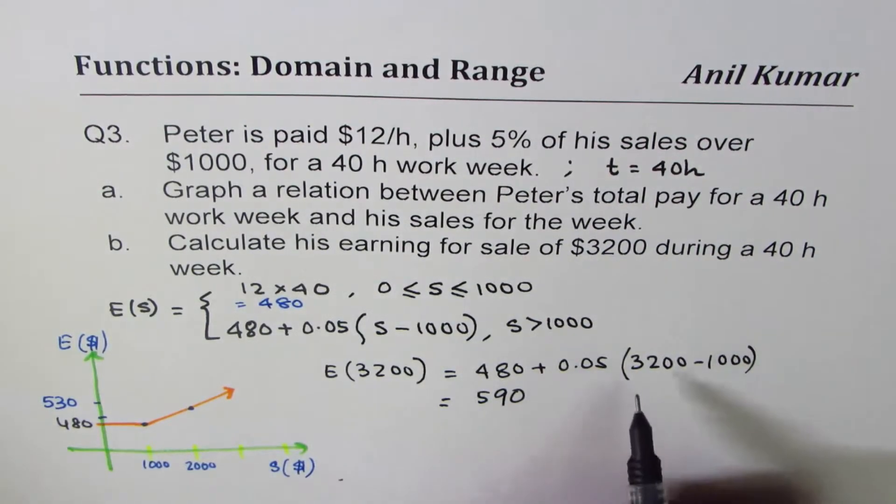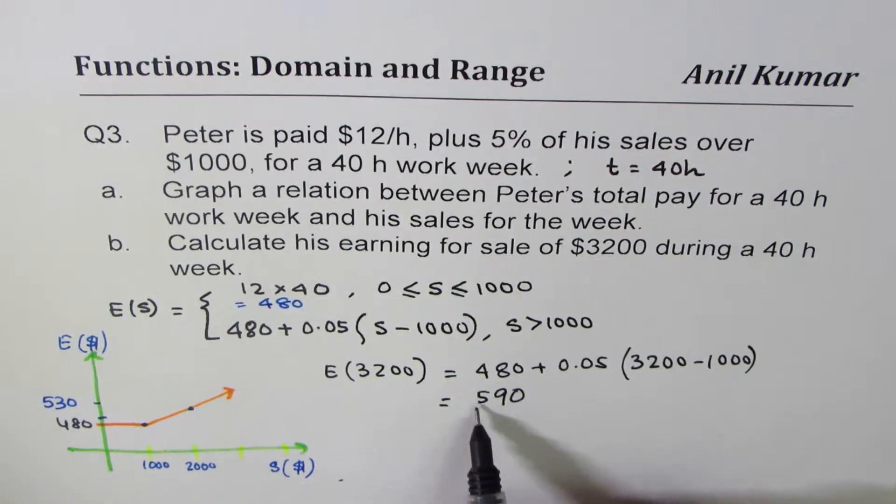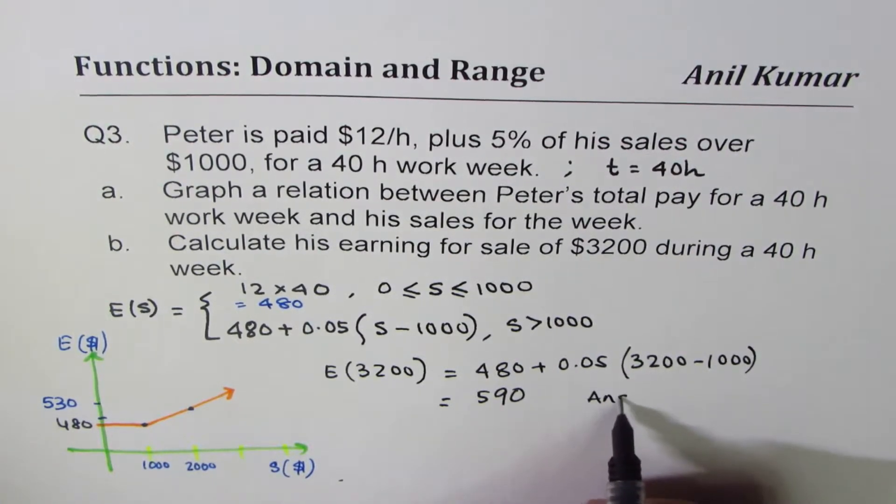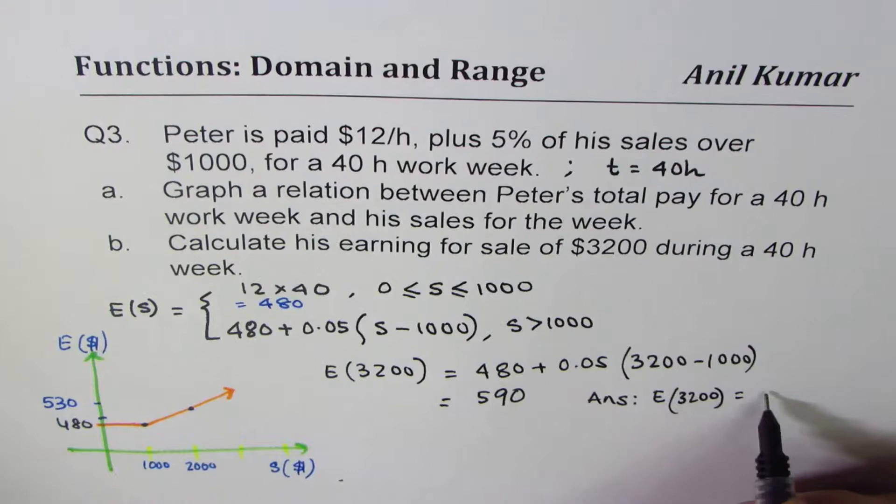So for a sale of 3200 the earnings will be 590 dollars. So we can write down our answer here as the earnings for 3200 is $590.